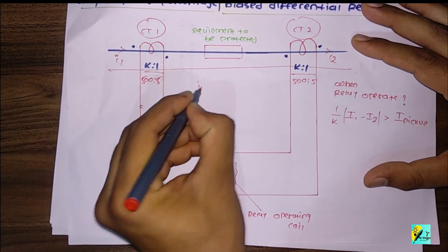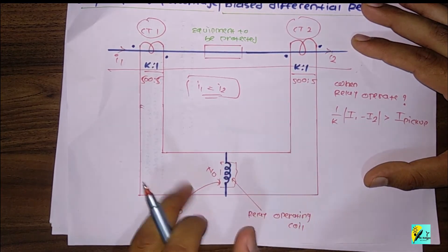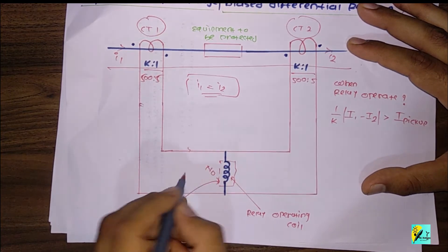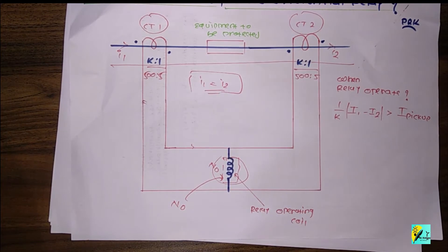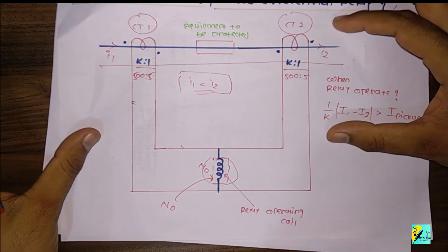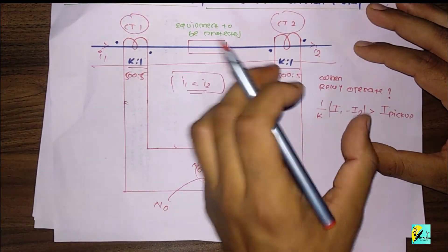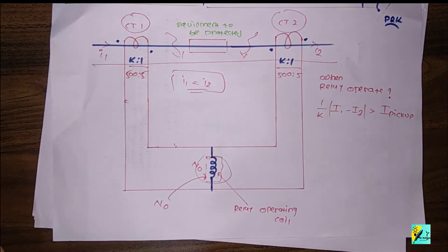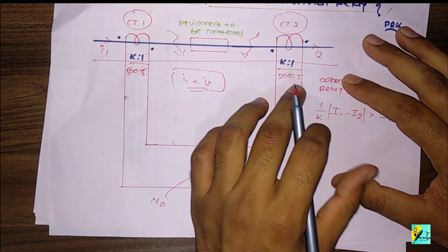In normal case, I1 should be equal to I2 — incoming current equals outgoing current. In that case, no extra current will circulate in the secondary and the relay operating coil will not operate. But there is a condition: even if there is no fault in this particular section, the relay may still get operated if the transformation ratios are different.